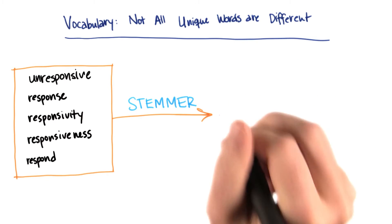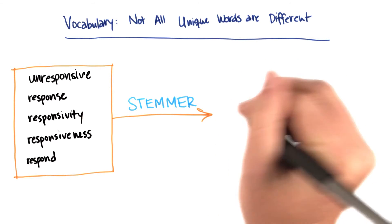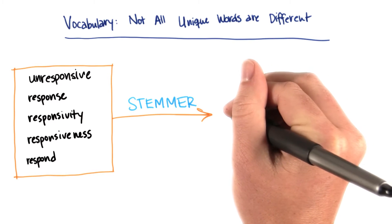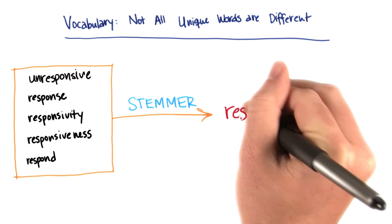So if I were to wrap up all of these words and put them into a stemmer, it would then apply a function to them that would strip them down all to have the same sort of root, which might be something like respon.